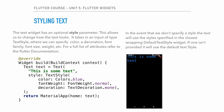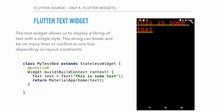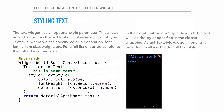In the example, we set color to Colors.blue, fontWeight to FontWeight.normal (which doesn't visually change anything since normal is the default), and decoration to TextDecoration.none which removes the underline seen previously. There are many things you can do with TextStyle — check the Flutter docs for the full list.